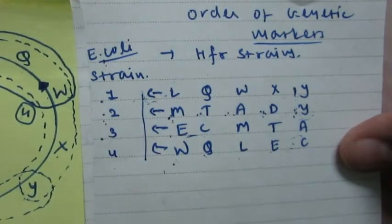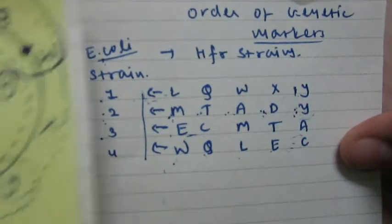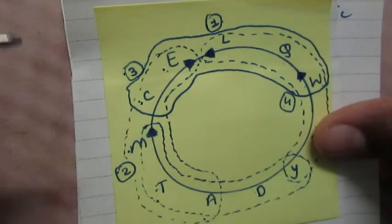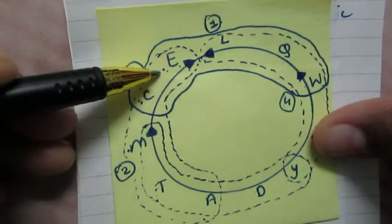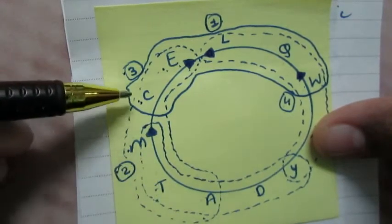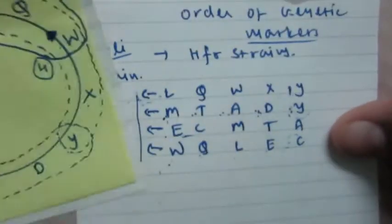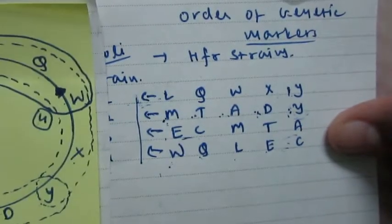In the third strain, E comes out first, followed by C M T and A. So I put an arrow key towards E. E comes out first, followed by C, M, T and A.